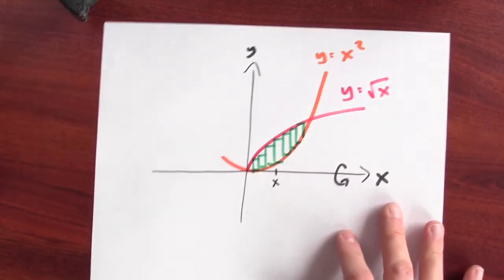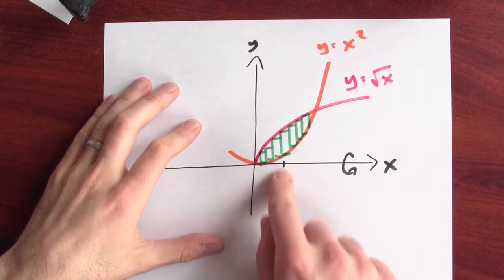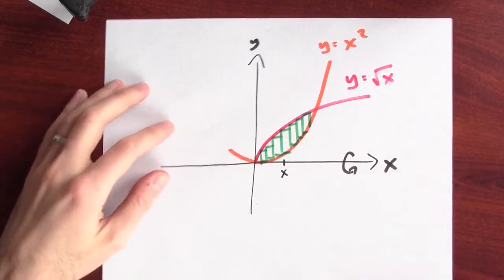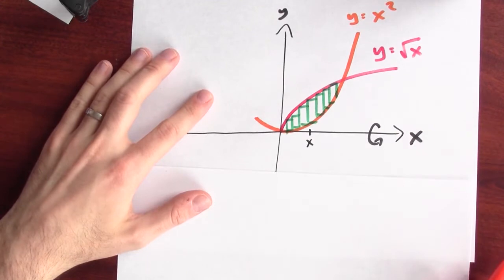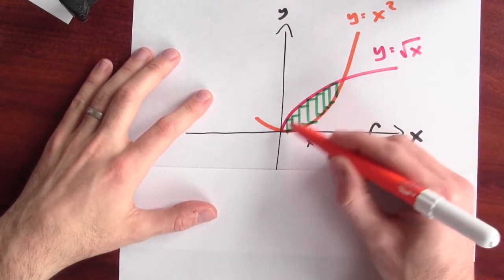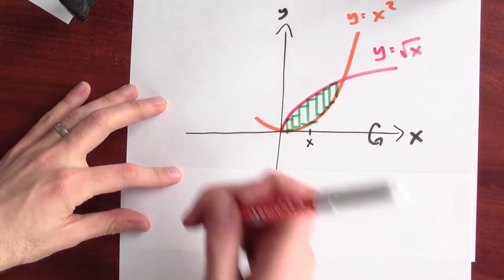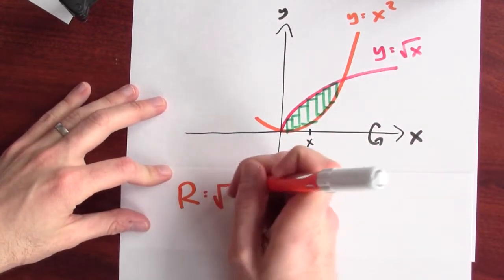Now, I'll use that formula, the volume formula for washer, to write down an integral that calculates the volume of the solid of revolution. Now, going back to this picture here, I want to figure out the volume of the washer at x. So I'll first think about what's the big radius. Well, the big radius here is on the red curve. That's the outside of the washer. So big R is the square root of x.